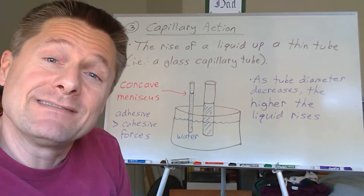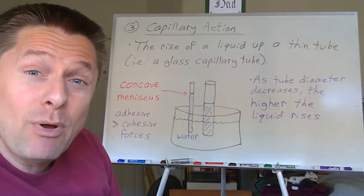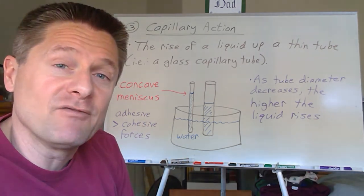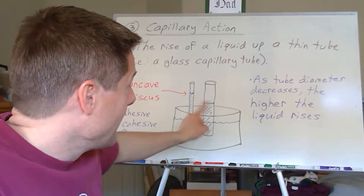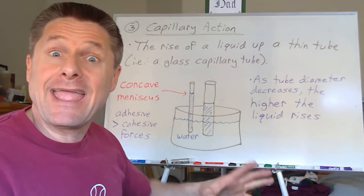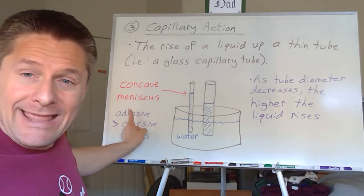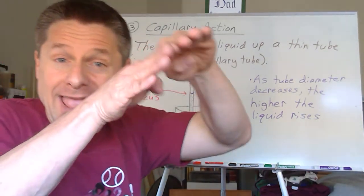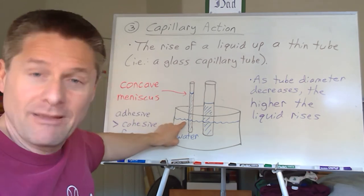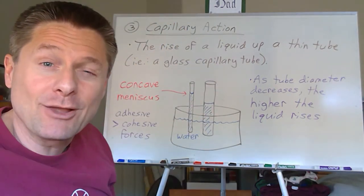Now what if we put a nonpolar liquid like mercury inside a glass capillary tube? In that situation, the cohesive forces would be greater than the adhesive forces because mercury is not attracted to glass — the adhesive forces are very weak. This gives a very different scenario and the meniscus looks quite different too. Let's compare and contrast the two cases.